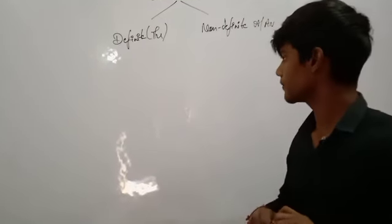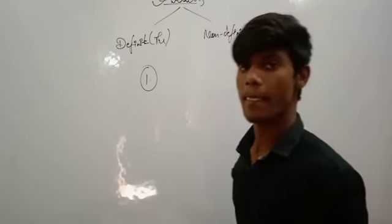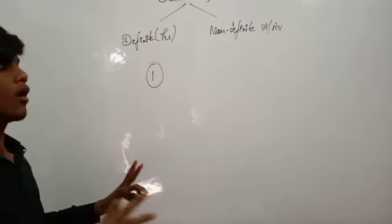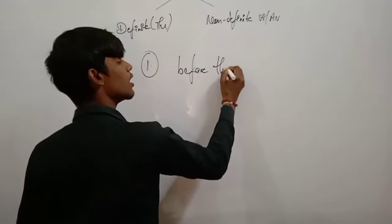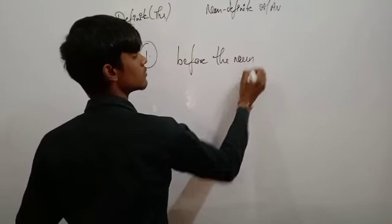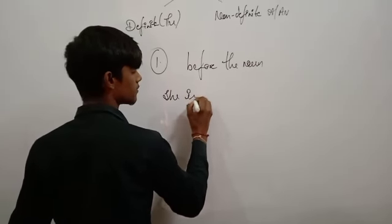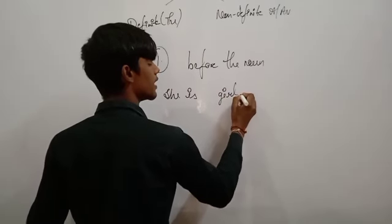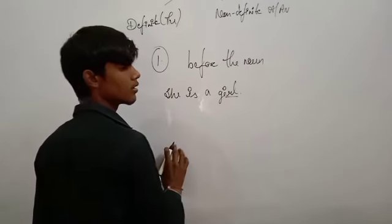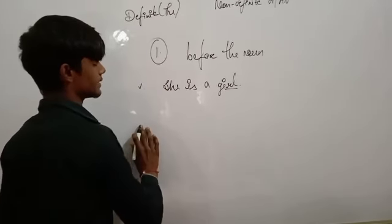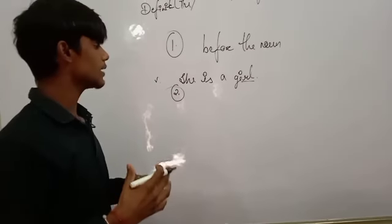The first thing I will start with: where do you use the articles? You will use the articles before the noun. For example, you will say 'She is a girl.' Then when the sentence is written, now you can say...